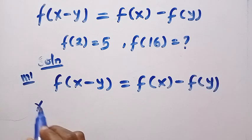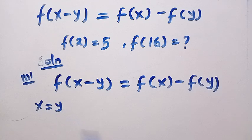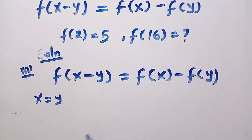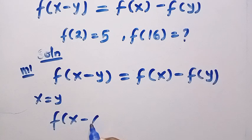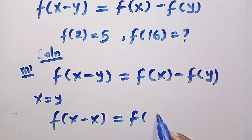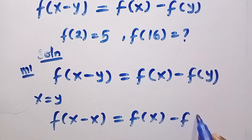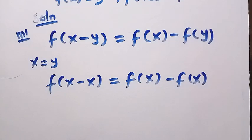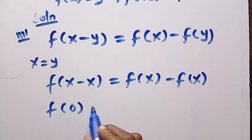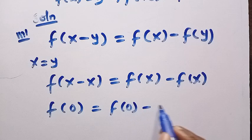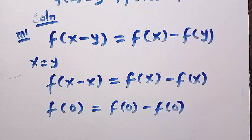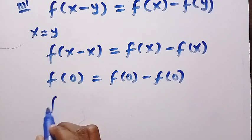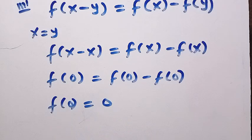Let's say I let x equal y. Anywhere we see x, we replace it with y, or anywhere we see y, we replace it with x. Going with x, we are going to have f of x minus x equals f of x minus f of x. With this, we have f of 0 equals f of 0 minus f of 0. And f of 0 minus f of 0 shows that f of 0 equals 0. So we test for y, and you can see it holds for x as well — both of them equal 0.